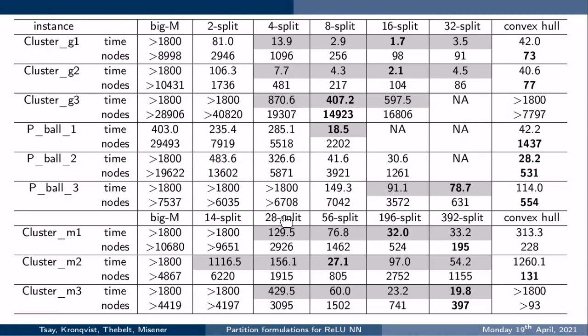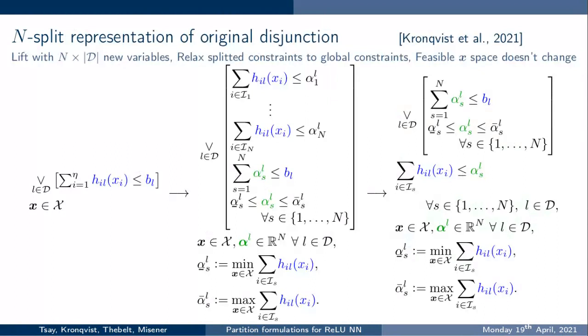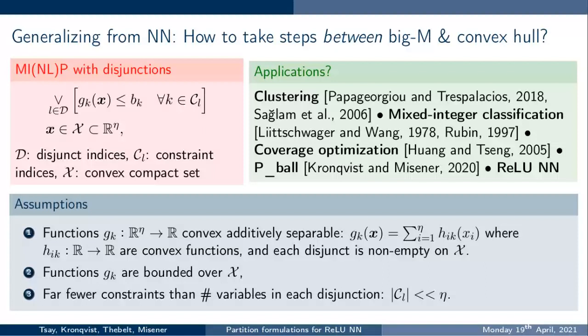An audience member asks: for the top and bottom clustering rows, is the clustering method different? Ruth confirms: yes, they are different optimization formulations for clustering — cluster-M versus cluster-G. The overall point is that the formulation is fairly robust across different problem types.